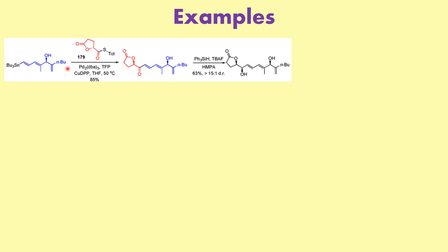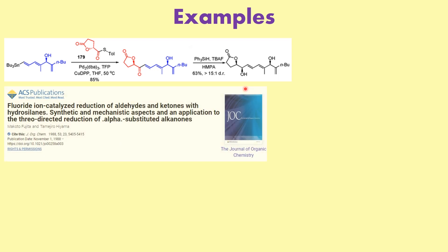The first of the advanced examples is very interesting — we have an organotin species and a thioester with a phosphine ligand to give an alpha-beta unsaturated system. In the second step, a stereoselective reduction of this carbonyl is carried out using triphenylsilyl hydride, using a polar aprotic solvent like HMPA to bring about this particular reduction. If you want to understand this reagent, I strongly suggest you follow the referenced paper.